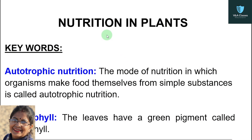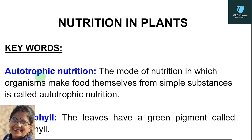Students, hope you are doing well. In the last video we completed chapter 1. Now in this video we will discuss some keywords and back exercise of nutrition in plants. The first keyword is autotrophic nutrition: the mode of nutrition in which organisms make food themselves from simple substances is called autotrophic nutrition.